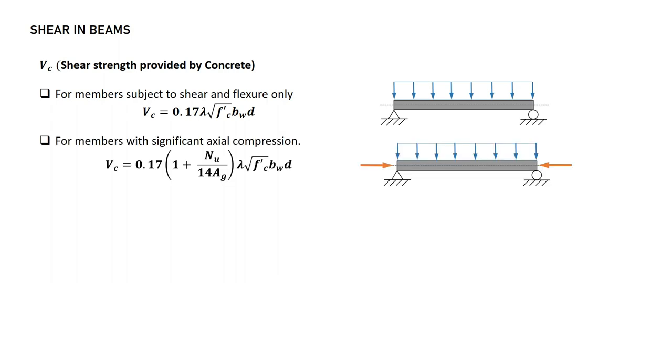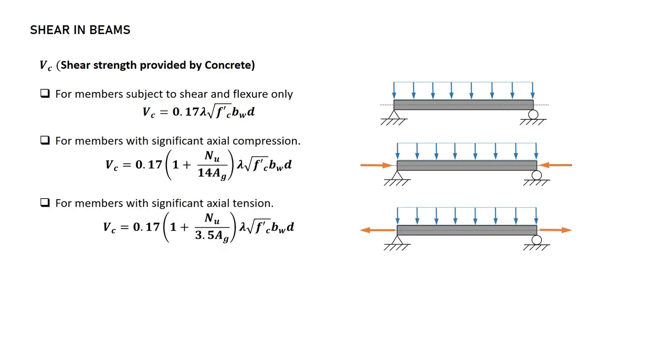For members with significant axial compression, VC is equal to 0.17 times (1 plus NU over 14 AG) lambda square root of F'c bw d. And for members with significant axial tension, VC is equal to 0.17 times (1 plus NU over 3.5 AG) lambda square root of F'c bw d.